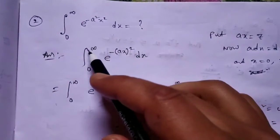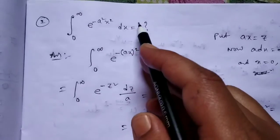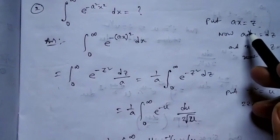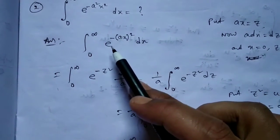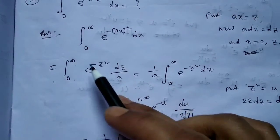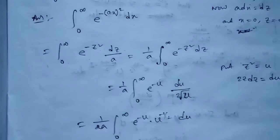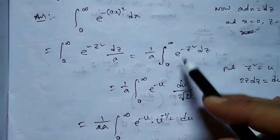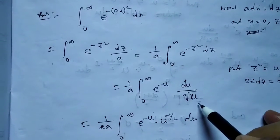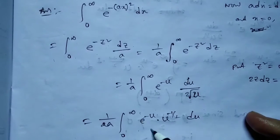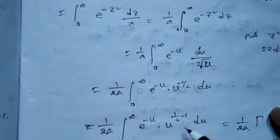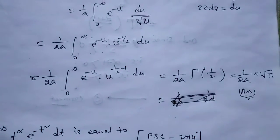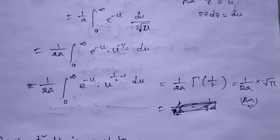Problem 2: What is the value of integration from 0 to infinity of e^(−x²) · x² dx? Let x = z, then the limit of integration remains 0 to infinity. Now put z² = u, so dz = du / (2√u). This gives (1/2) · integration from 0 to infinity of e^(−u) · u^(1/2 − 1) du = (1/2) · Γ(1/2) = √π / 2.